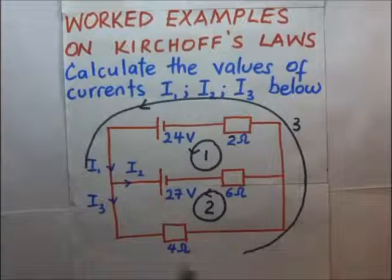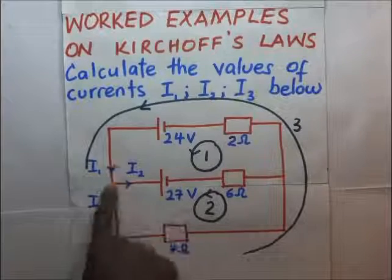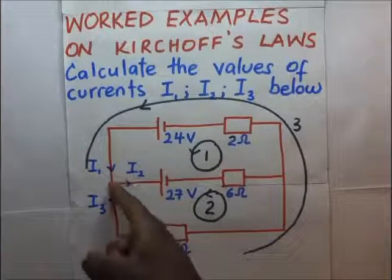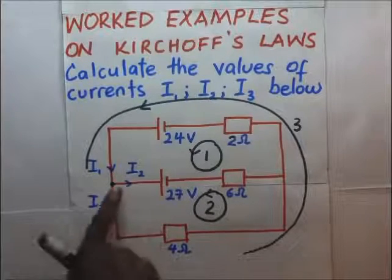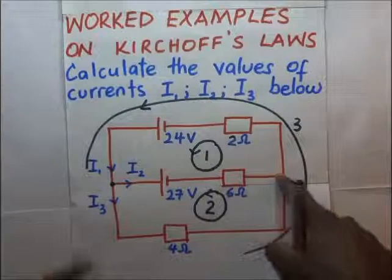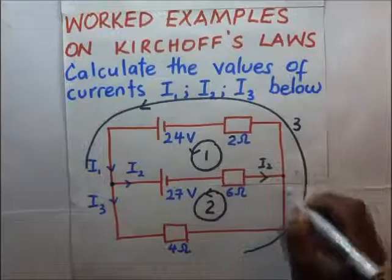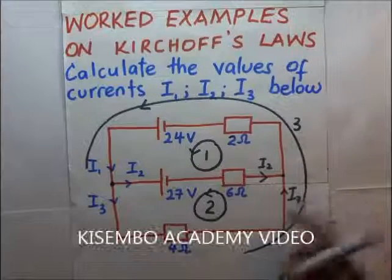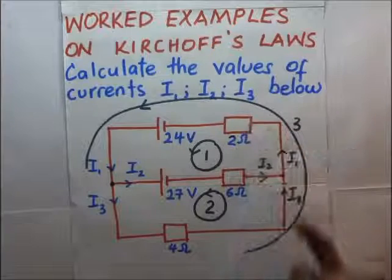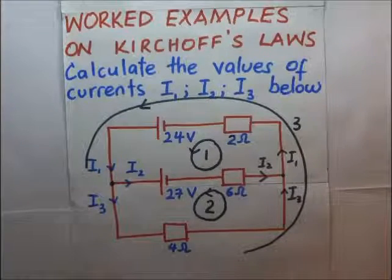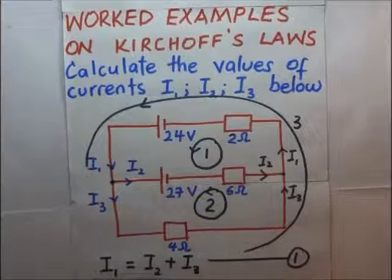We start generating our equations. Current is flowing in from the 24 volt source — that is current I1. When it reaches the junction it is split: some current will move one way and some will move the other way. When I2 and I3 meet again at the next junction, they combine back to current I1. From our first law, we know that I1 is equal to I2 plus I3. That is our first equation.